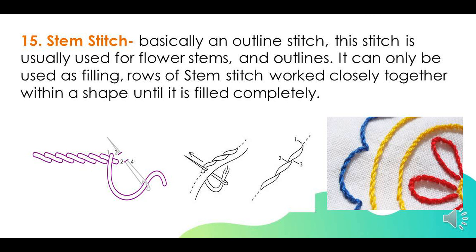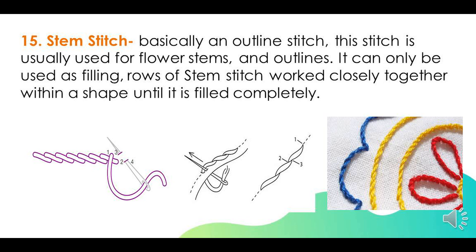Stem stitch. Stem stitch is basically an outline stitch, usually used for flower stems and outlines. It can also be used as filling — rows of stem stitch worked closely together within a shape until it is filled completely.